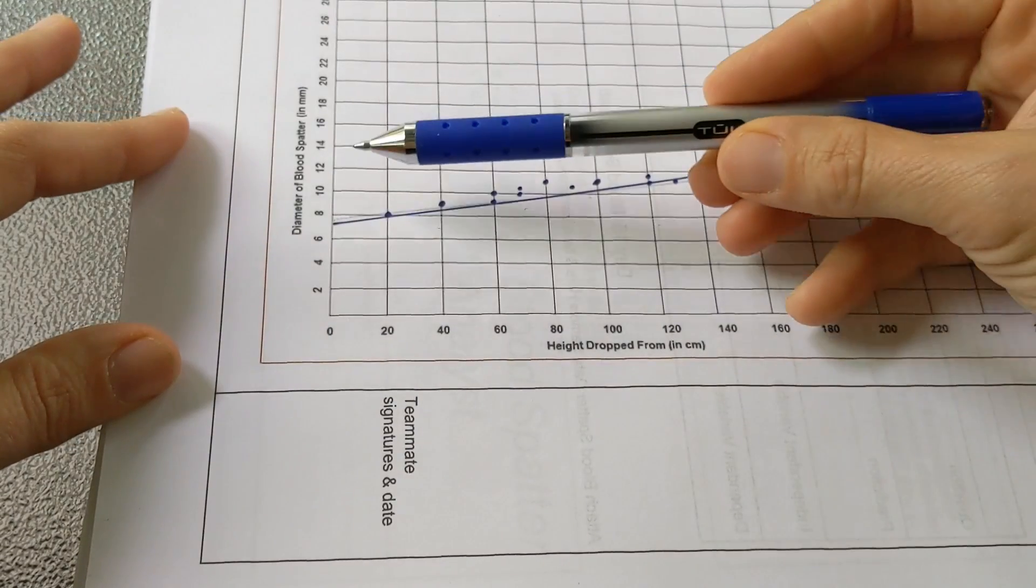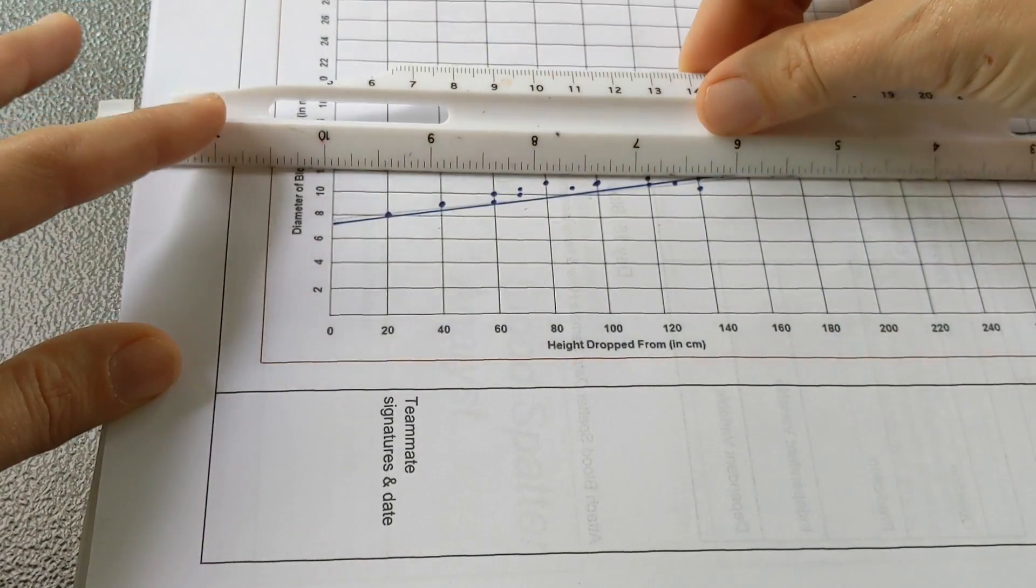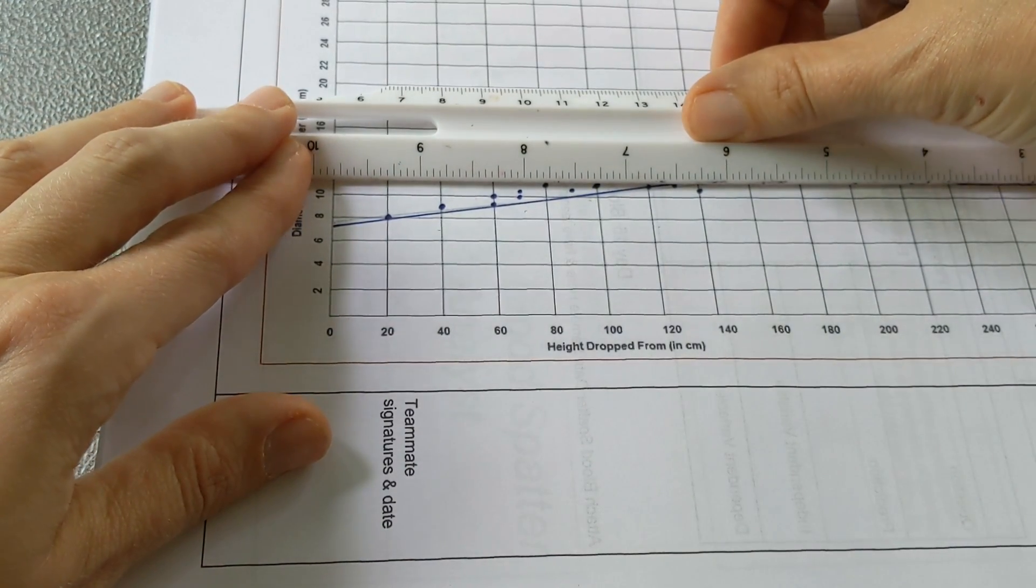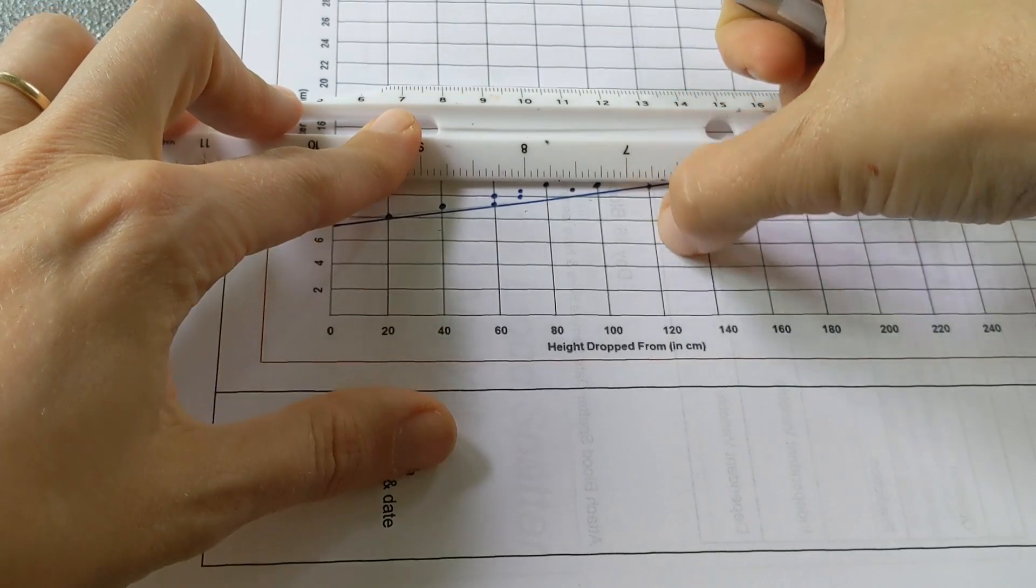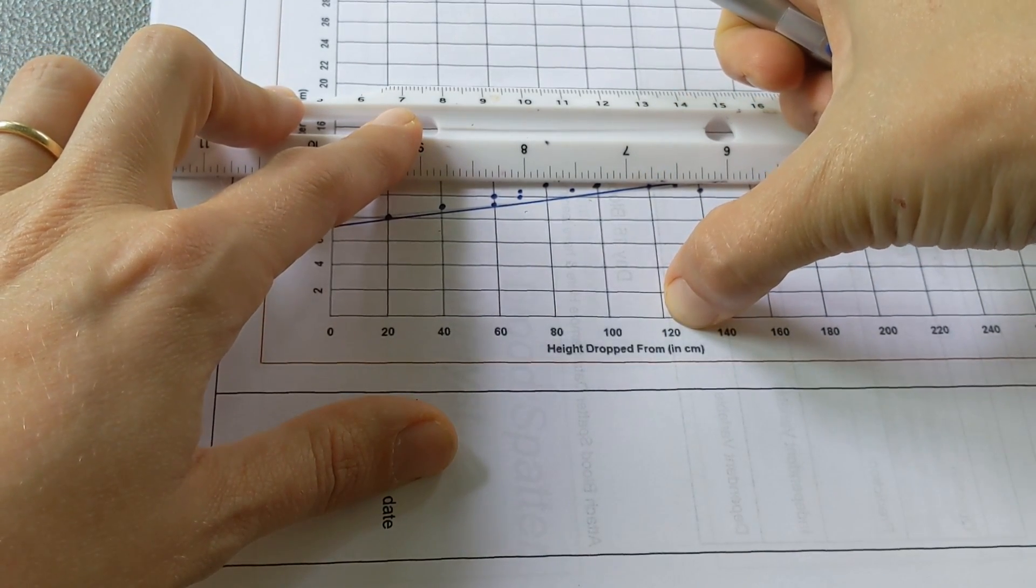I go to my y-axis, I go to 11, which is right between 10 and 12, go directly across to my best fit line, and then read down, and it looks like that fell from about 120 centimeters in height.